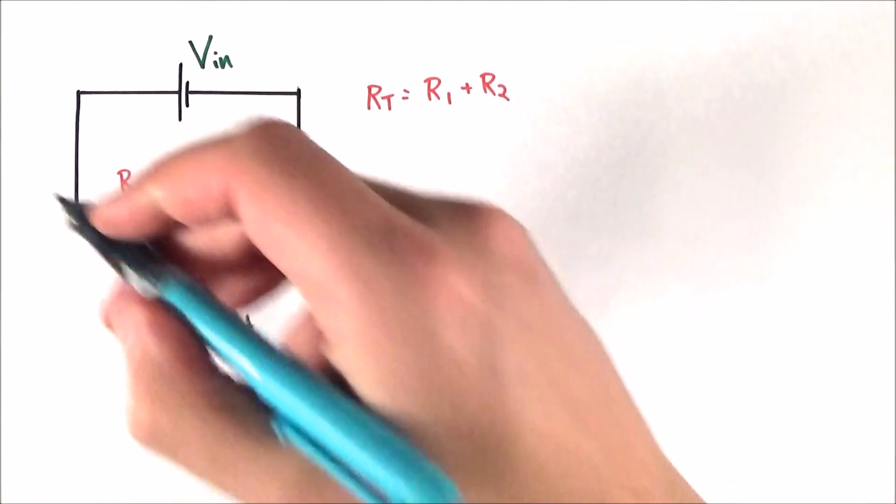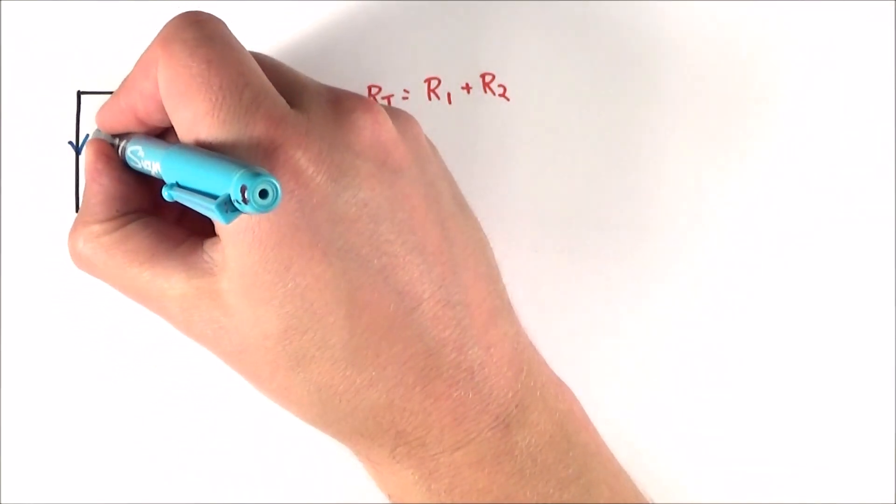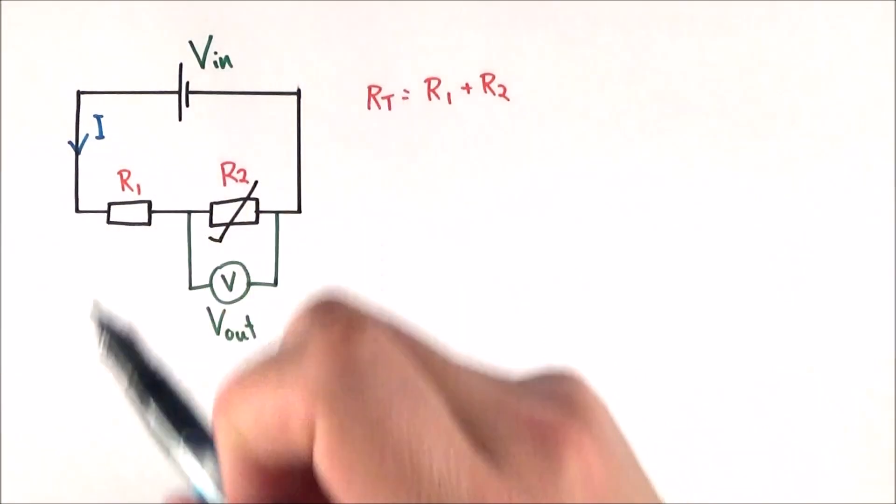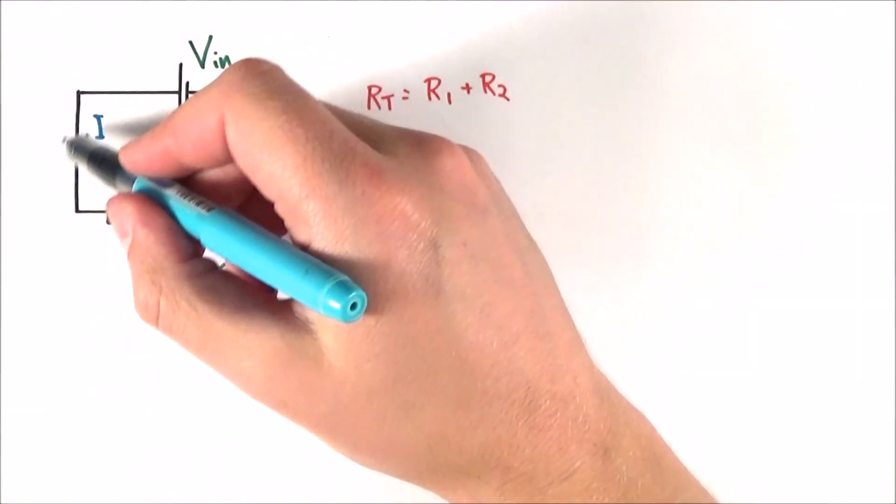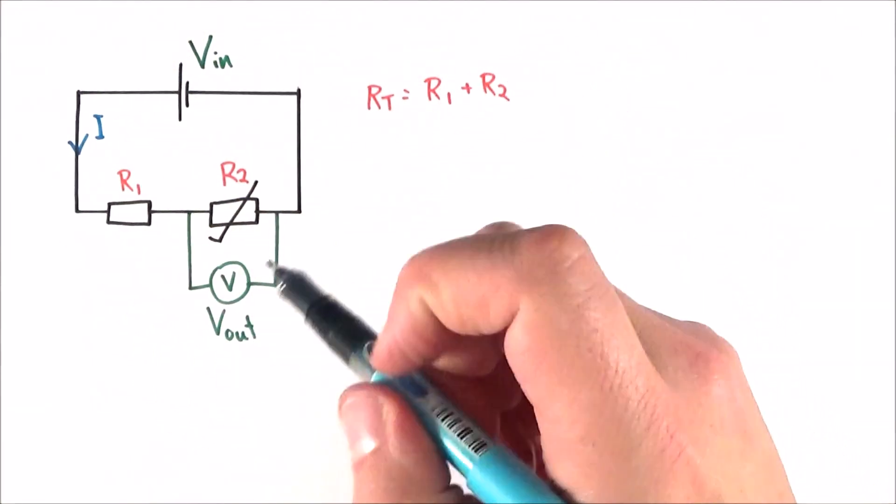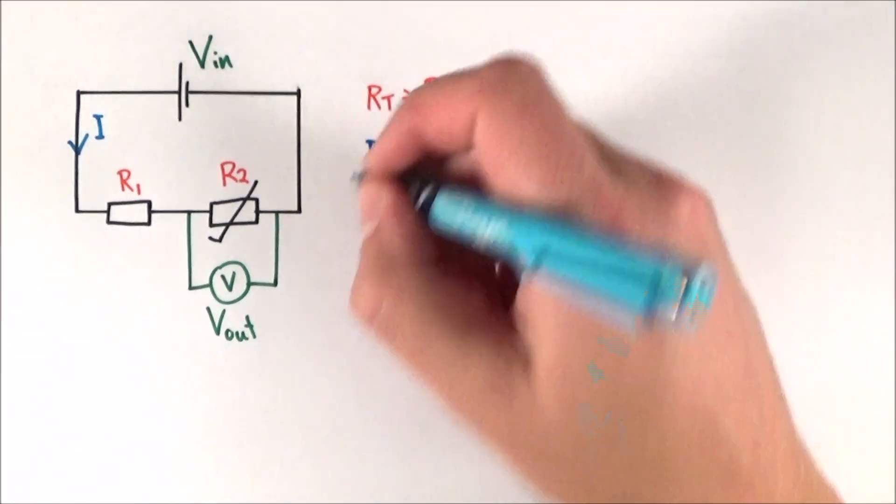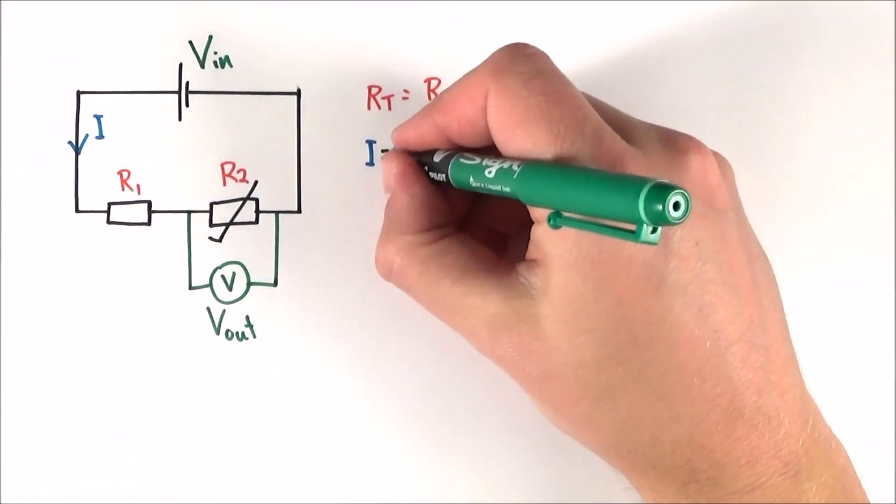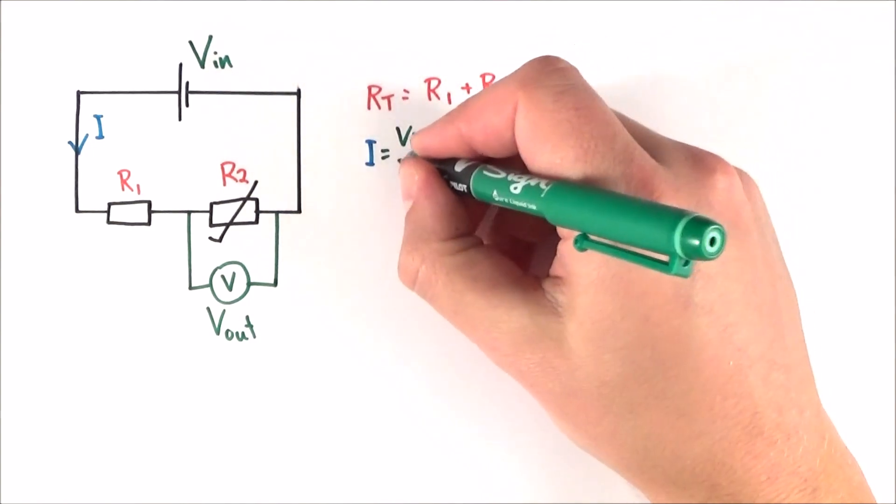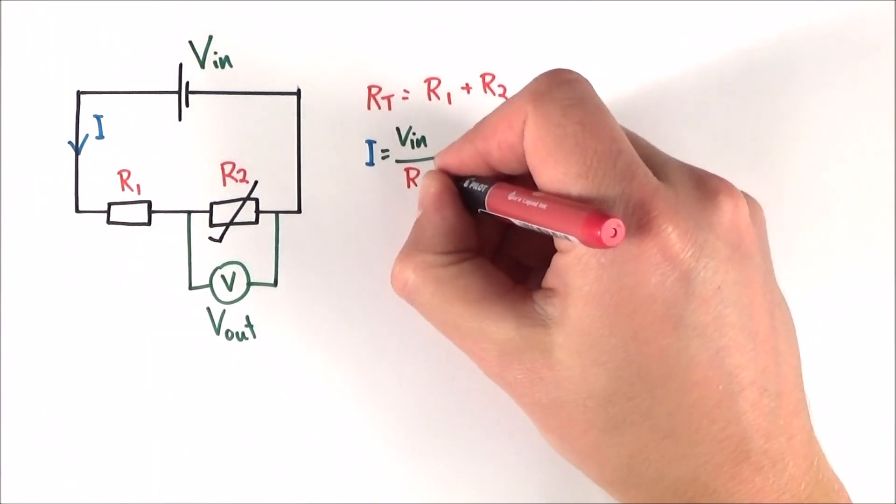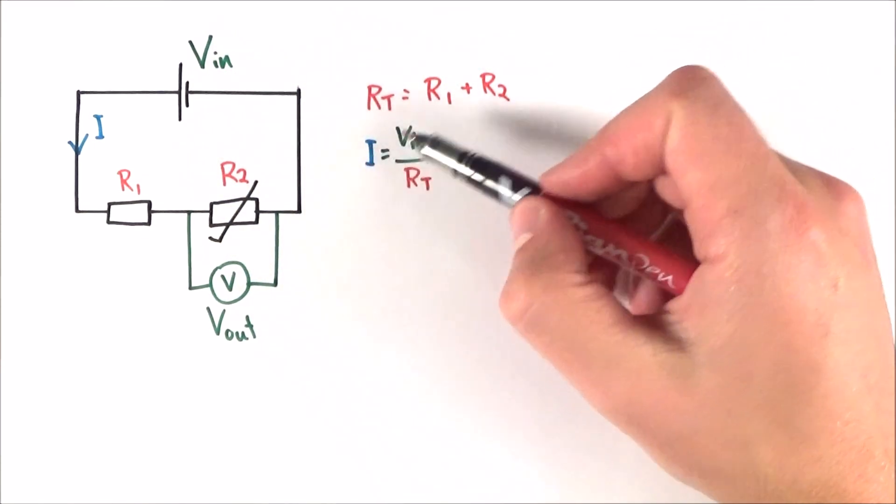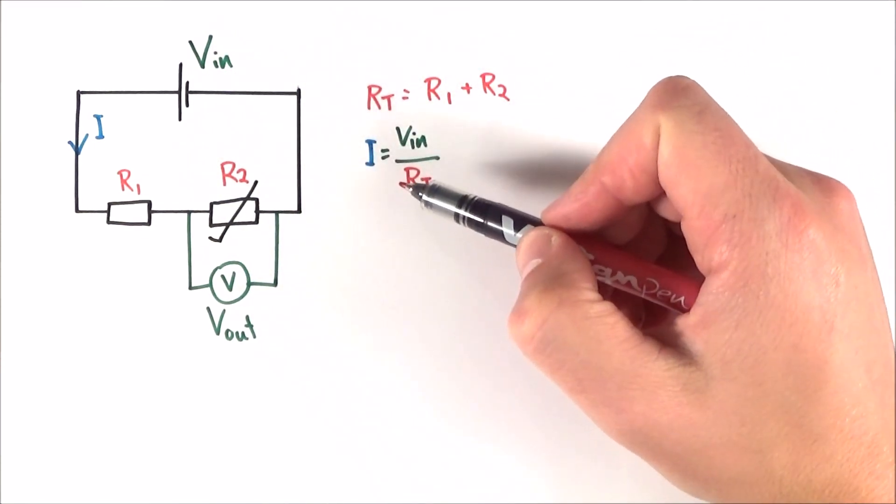And we can also maybe look at the current I that flows in the circuit. And because of Kirchhoff's first law, we know that the current everywhere in this circuit is going to be exactly the same. So if we wanted to work out the value of this current, we could look at both the potential difference in and also the value of the total resistance. So we can say that the current is equal to V in over RT.